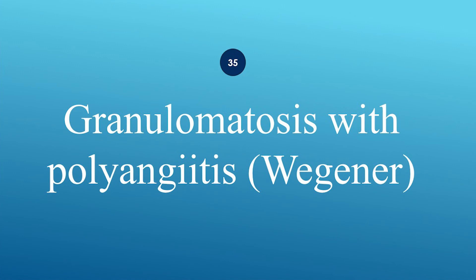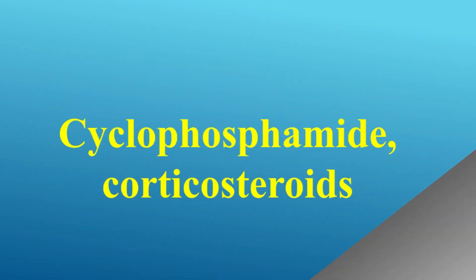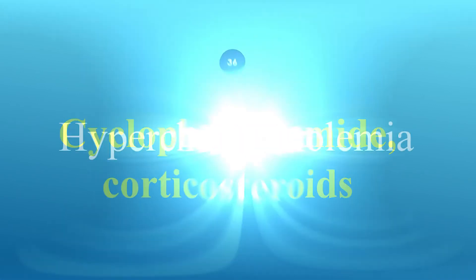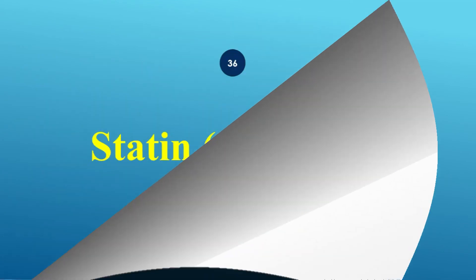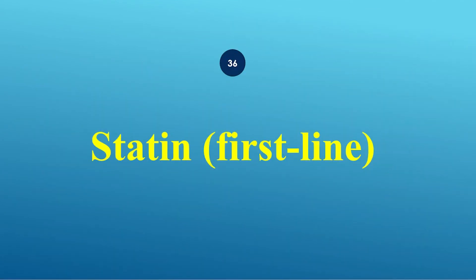What is the treatment of granulomatosis with polyangiitis, also known as Wegener's granulomatosis? Use cyclophosphamide and corticosteroids. What is the treatment for hypercholesterolemia? First-line treatment is statin.